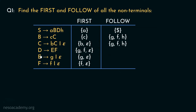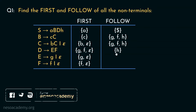Now let's figure out Follow of D. D only appears in one place, and the symbol following D is the terminal symbol h. So clearly, in Follow of D we are going to have only the symbol h.